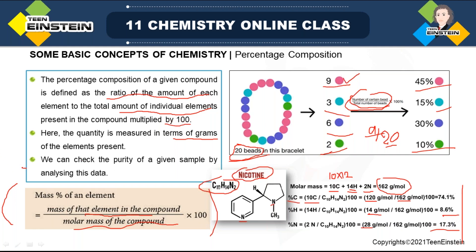If the sample is 100% pure, then for nitrogen the percentage should be about 17%. But if somehow the measured value is less than that, it means whatever mass of sample you have is not completely nicotine — there must be some impurity. This is the application of percentage composition: we can check the purity of any given sample.